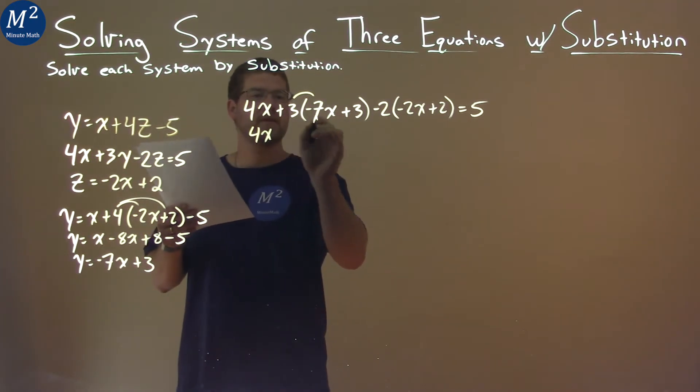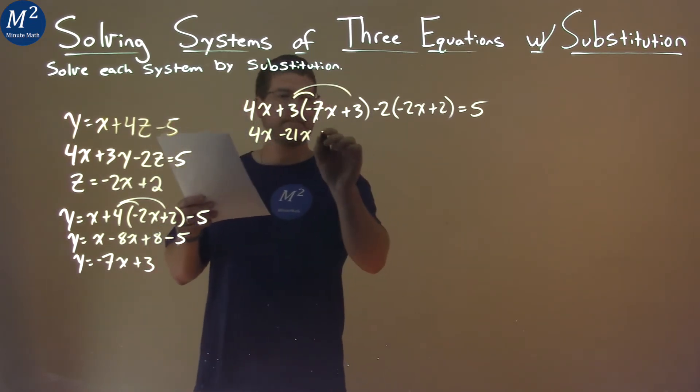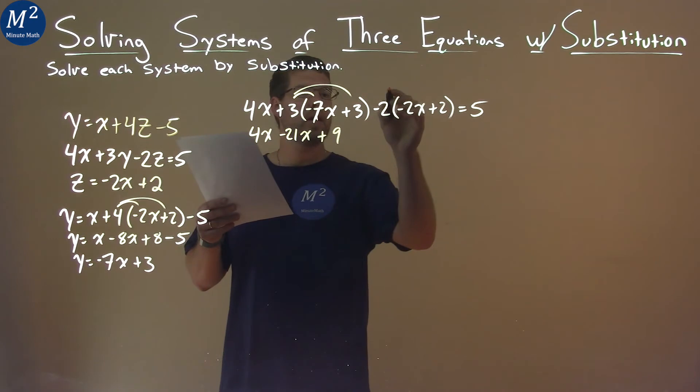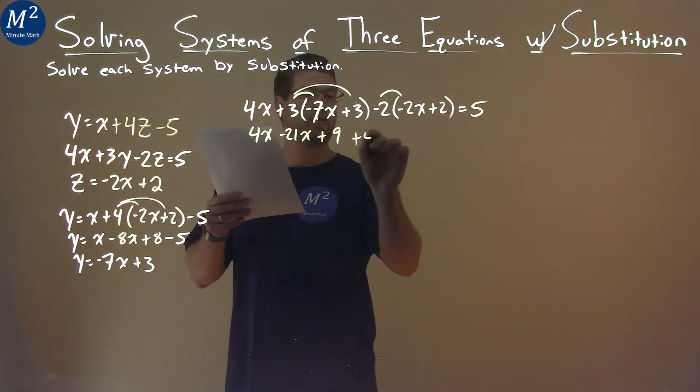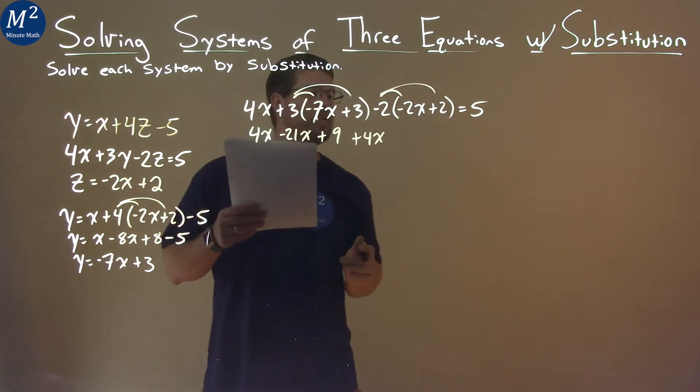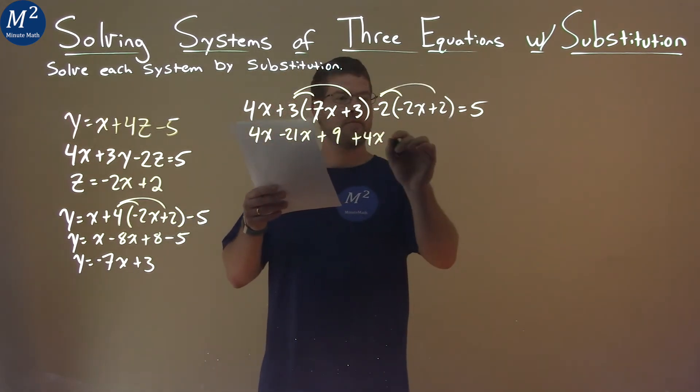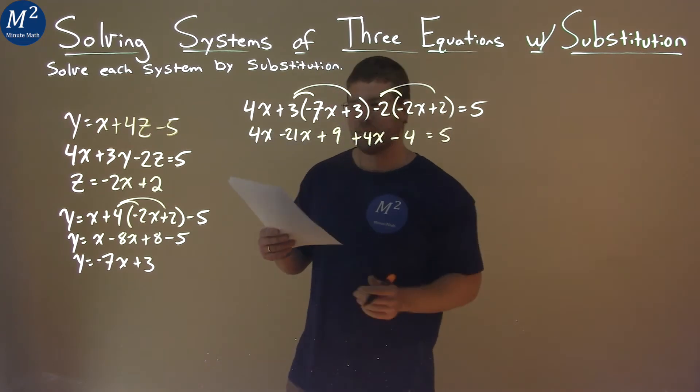3 times -7x is -21x. 3 times 3 is 9. And then we have minus 2 times minus 2x is a positive 4x, and minus 2 times 2 is -4, and that's equal to 5.